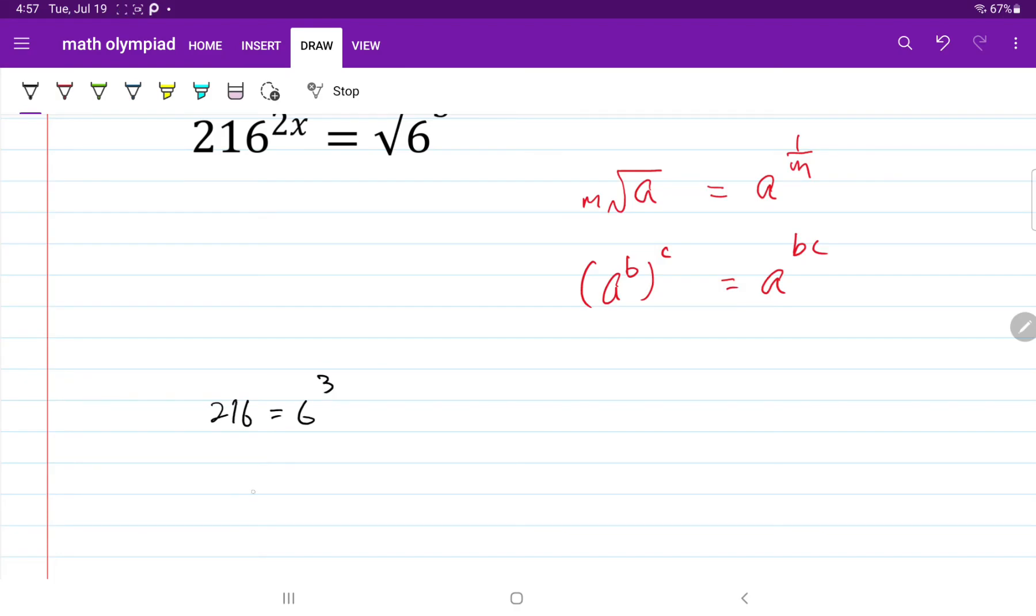So on the left hand side, now I have 6 cubed to the power of 2x is equal to 6 to the power of half cubed.